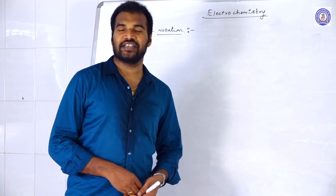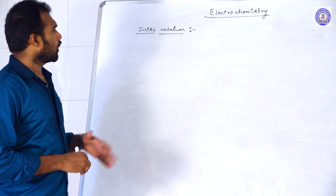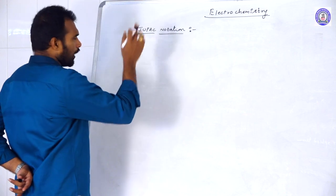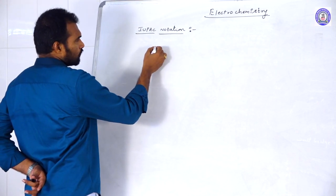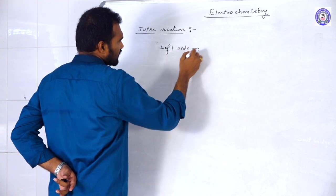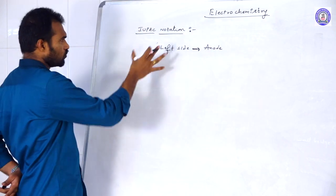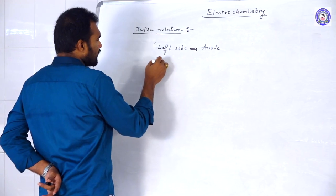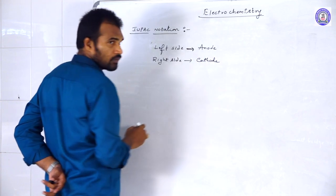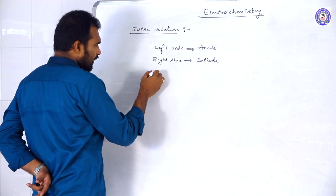In this segment, let us rediscuss the IUPAC notation of a galvanic cell. As per IUPAC norms, always remember that in IUPAC form, the left side is always the anode — the anodic cell — and the right side is always the cathodic reaction. A single vertical line represents the electrode or phase transition between the metal and its ionic solution.